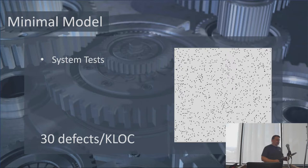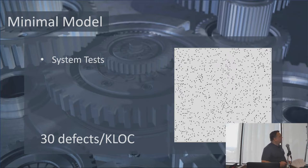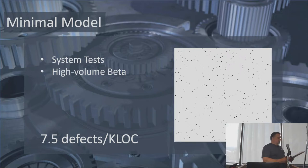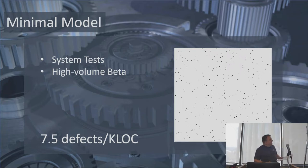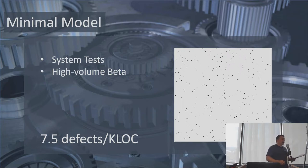When we add system tests, the defect density drops down to about 30 defects per KLOC. Next, the project either ships with 30 — letting users be the beta — or runs a high-volume beta of more than a thousand instances to wring out more defects. Taking that into account, you can bring the defect density down to seven and a half, which is still somewhat high but roughly where they'll stay unless they introduce more defect removal activities.